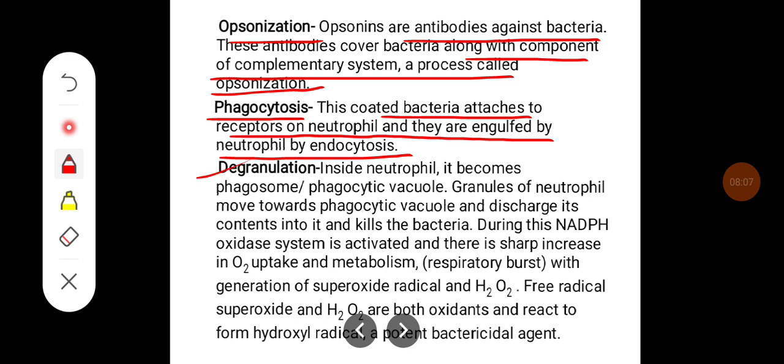Then there will be degranulation inside the neutrophil. It becomes phagosome or phagocytic vacuole. Granules of neutrophil move towards phagocytic vacuole and discharge its content into it and kill the bacteria.